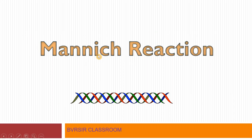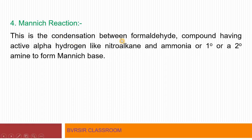Next is the Mannich reaction, another very important reaction. The Mannich reaction is a condensation between formaldehyde (HCHO), a compound having an active alpha hydrogen like a nitroalkane, and ammonia or a primary or secondary amine, to form a Mannich base. These three components — formaldehyde, active alpha-hydrogen compound, and amine — condense together to give the Mannich base.